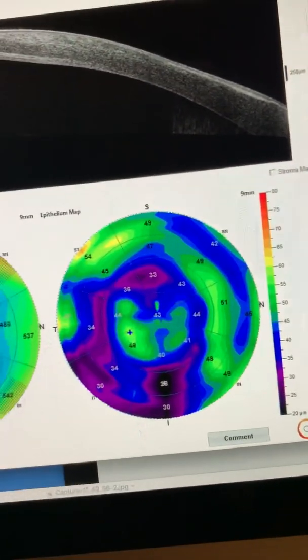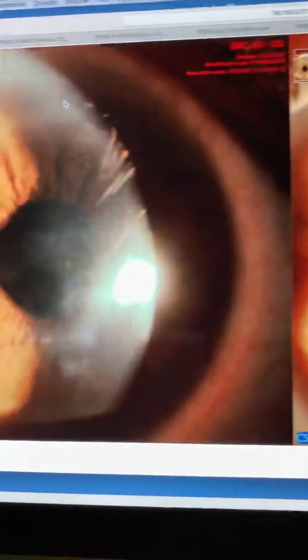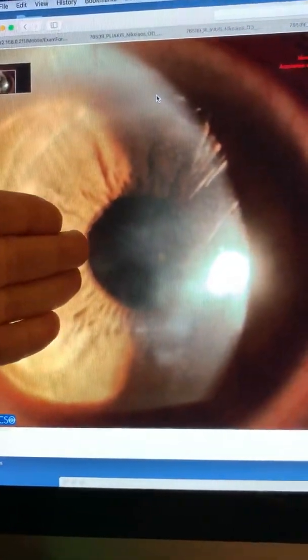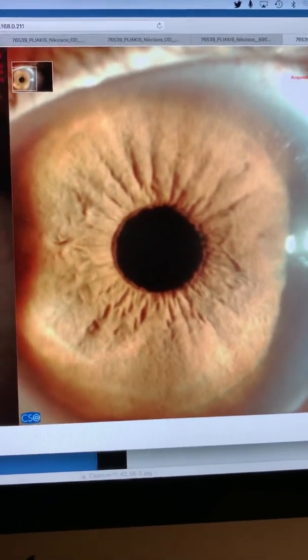And the epithelium is almost remodeled. This should turn all green in order to say that the patient has recovered. Let's look at the external pictures here. We can see this eye with the ground glass appearance of cross-linking, but relatively clear cornea.